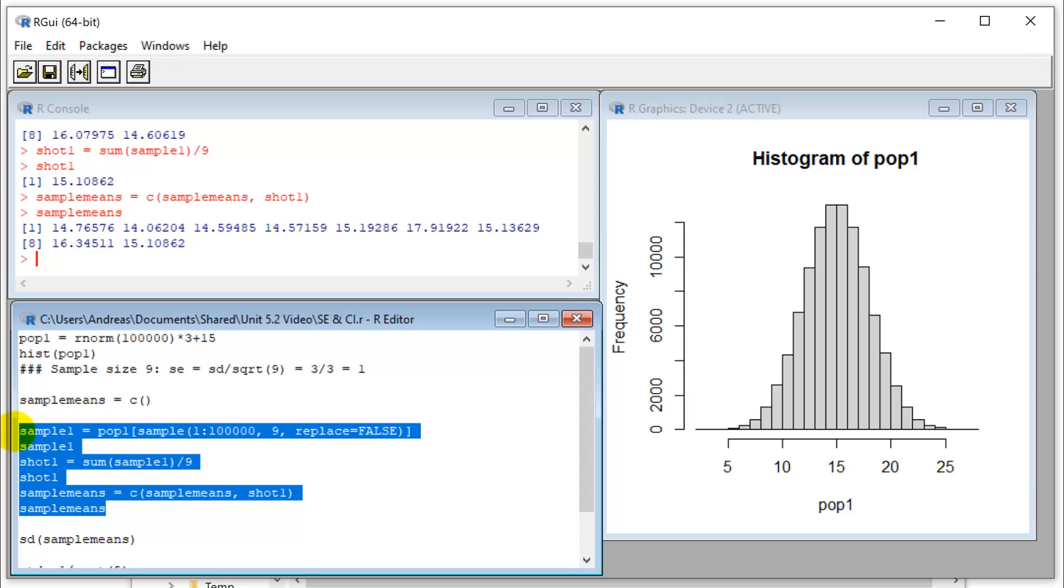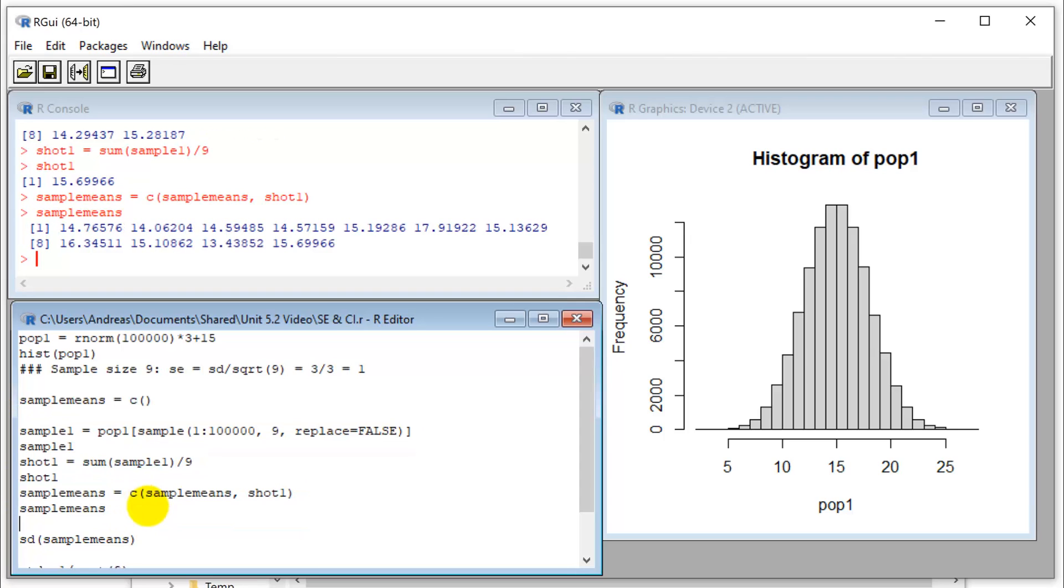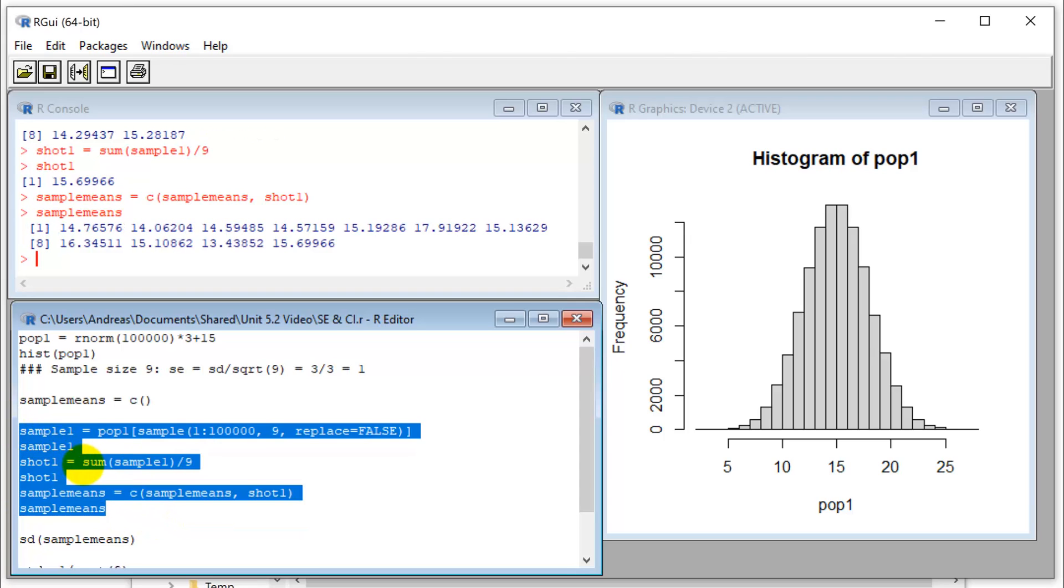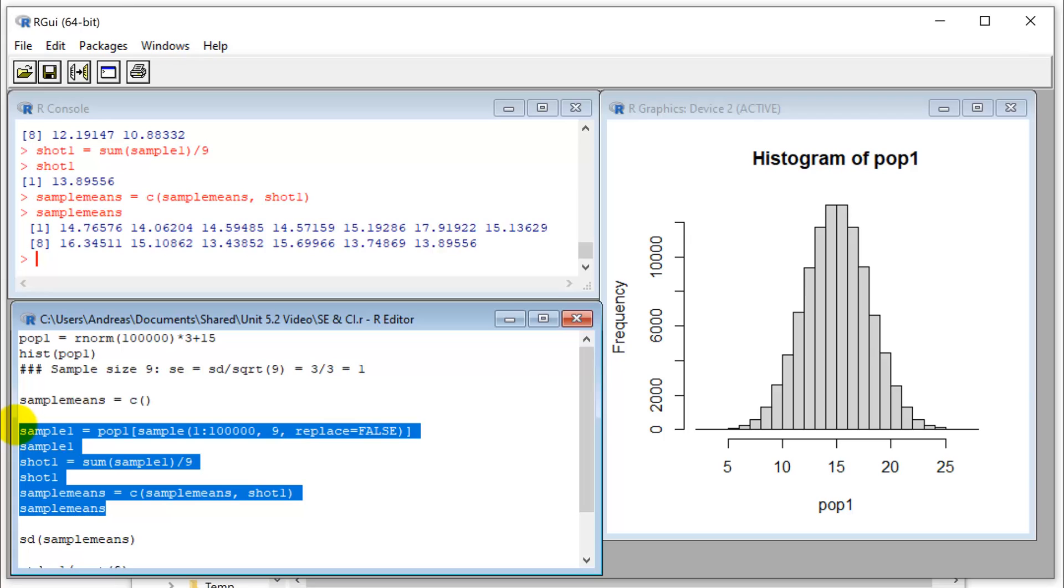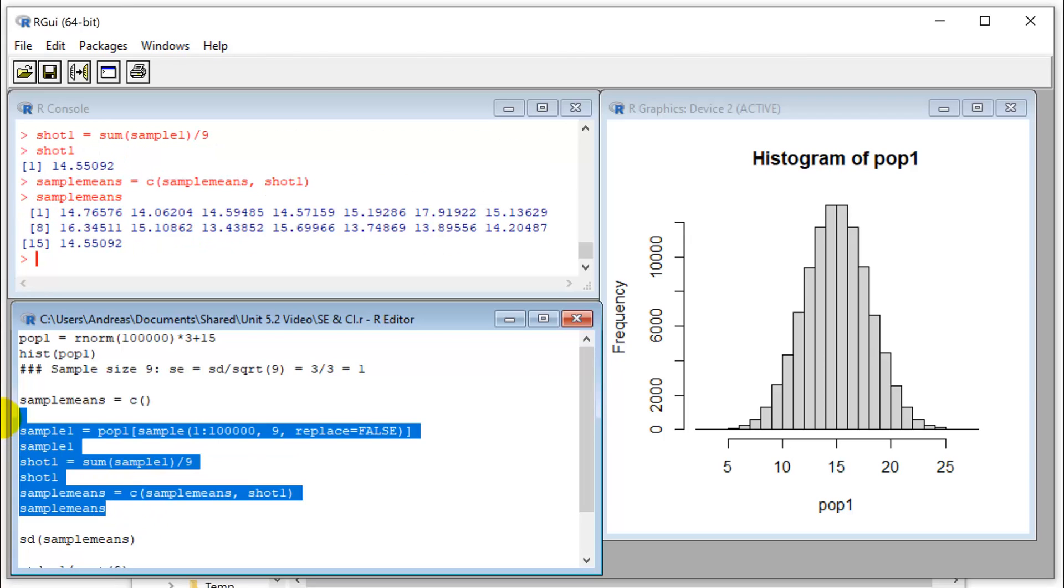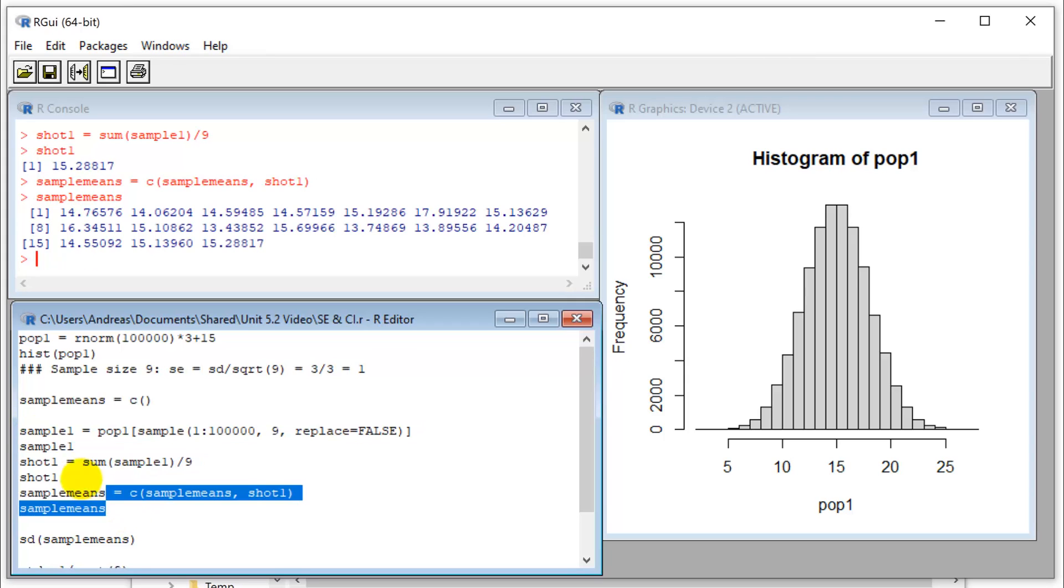And I'm just going to run this a couple of times. I could obviously put this in a loop, but it's nice to be transparent and see what's actually happening. So now we get a little bit more variation here. And usually I do this with a class. So everybody calculates a standard error. And then we sum them all up and look at the distribution.